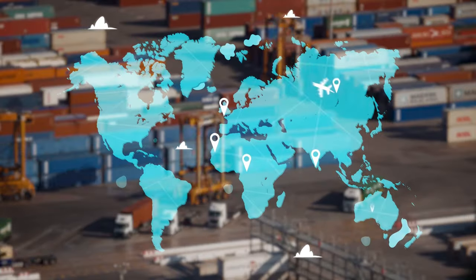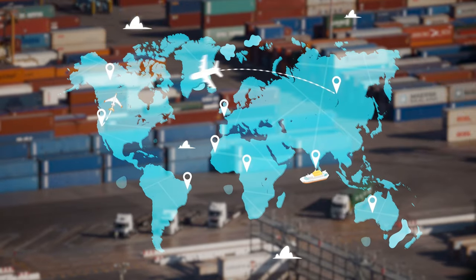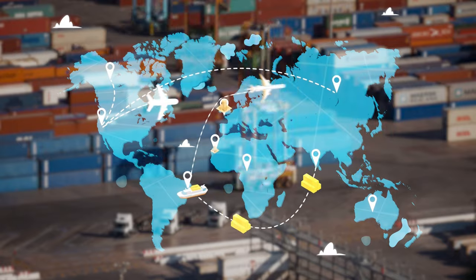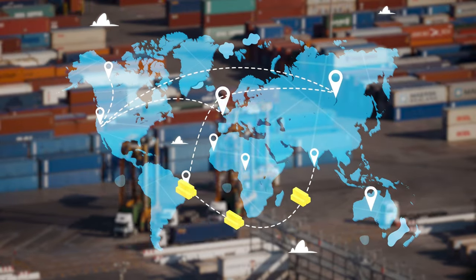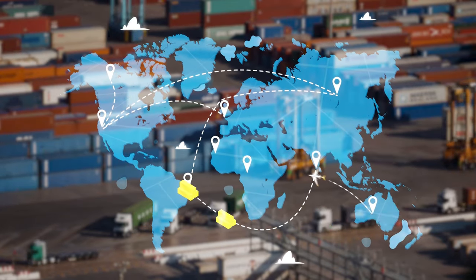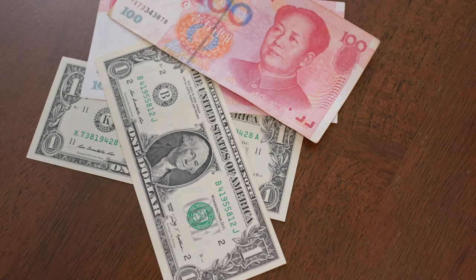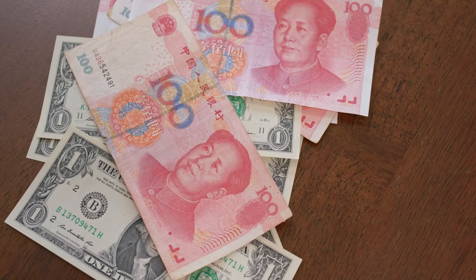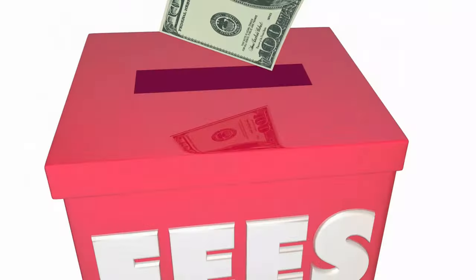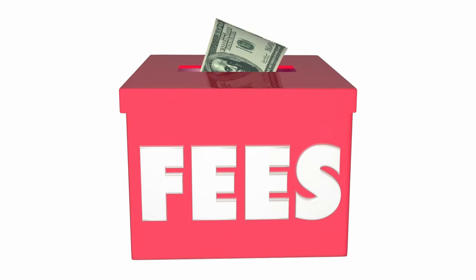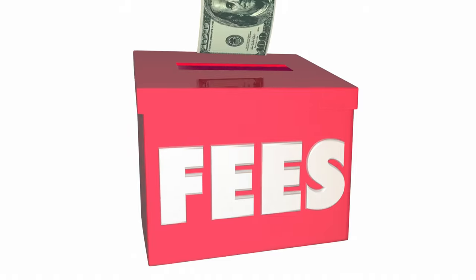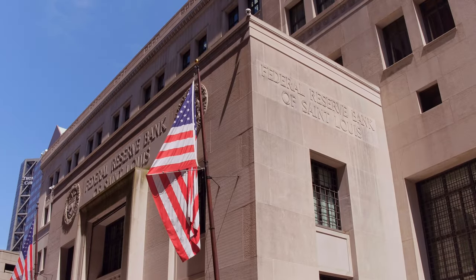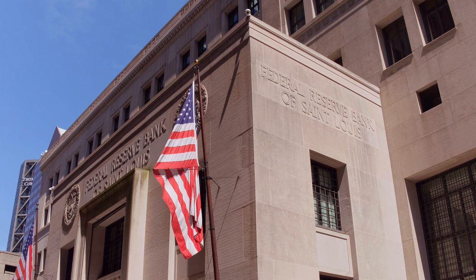The way trade works today: if a country wants to buy something from China, the buyer must convert their currency into US dollars to pay the Chinese seller, and then the Chinese bank converts those dollars into yuan. This creates two problems — both parties pay additional conversion charges, and both are dependent on the Fed and US policy decisions.